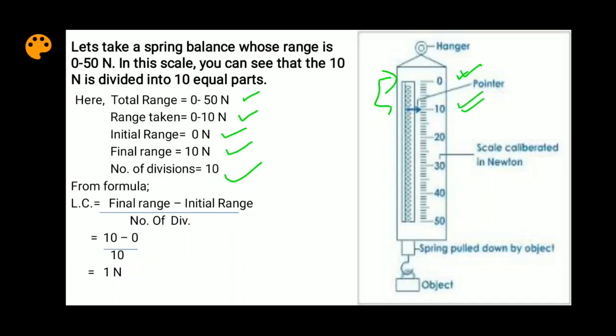Now, from the formula, least count equals range upon number of divisions, where range is final value minus initial value. Here, final range is 10 Newton and initial range is 0.